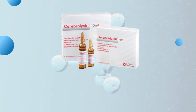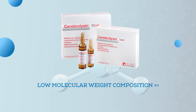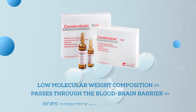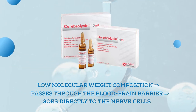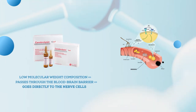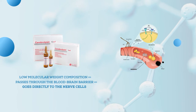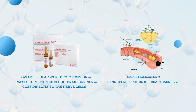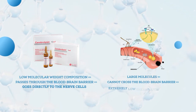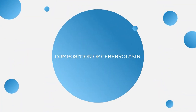Another feature of Cerebrolysin is its low molecular weight composition, which lets it easily pass through the blood-brain barrier and go directly to the nerve cells. This is the difference between Cerebrolysin and NGF (nerve growth factor) or BDNF (brain-derived neurotrophic factor) — their large molecules cannot cross the blood-brain barrier, and as a result, unlike Cerebrolysin, they have an extremely low therapeutic potential.